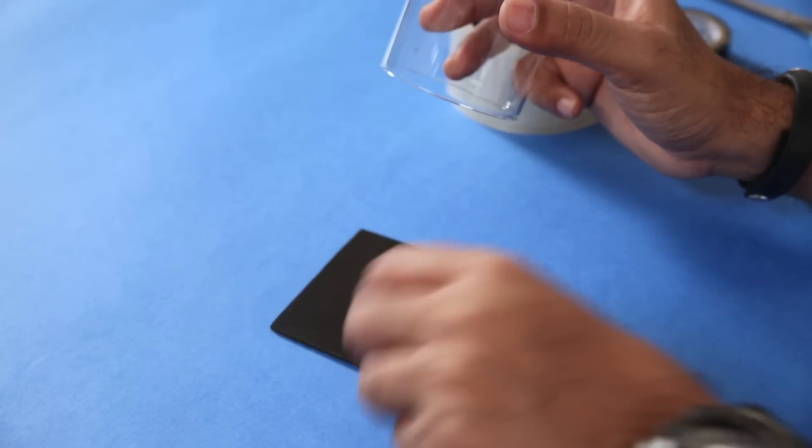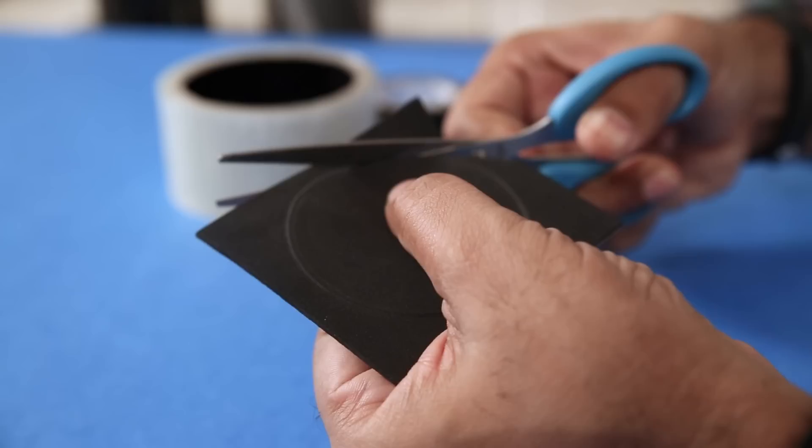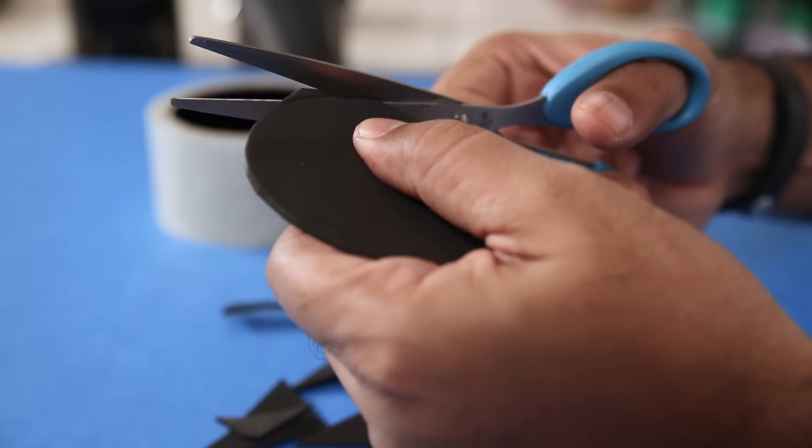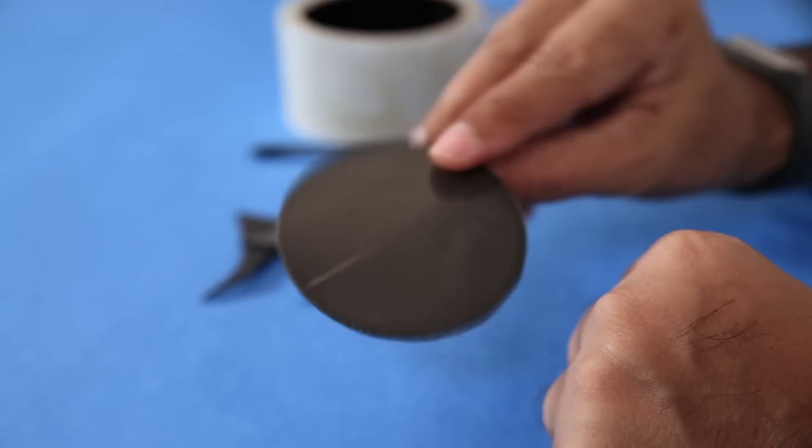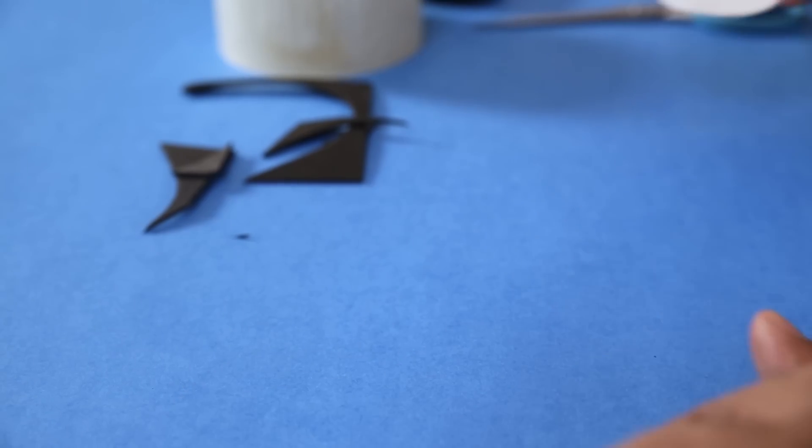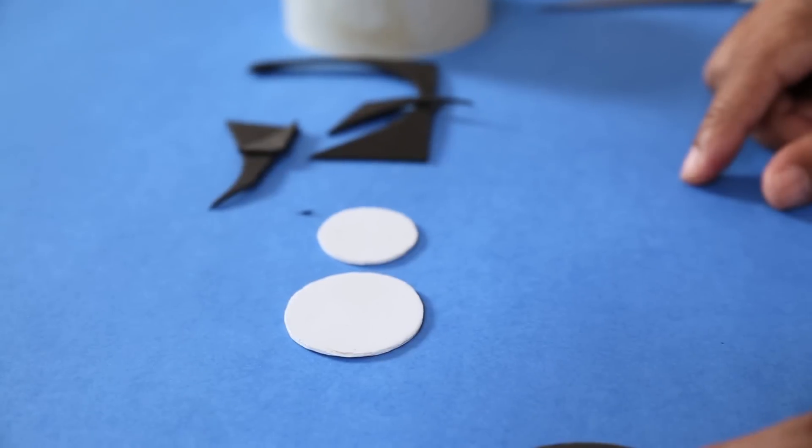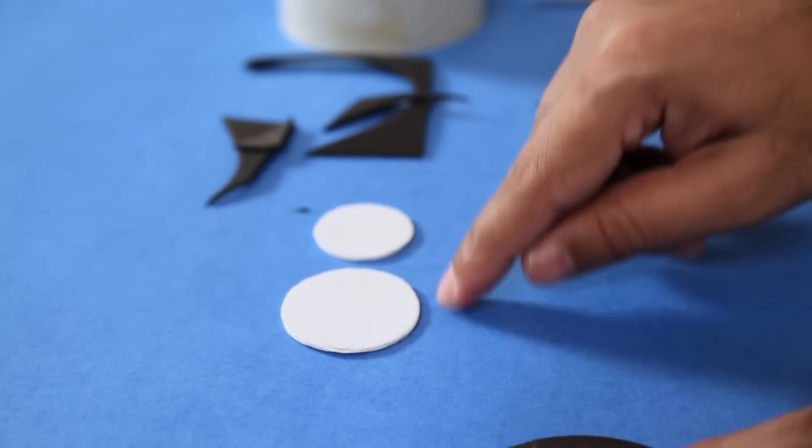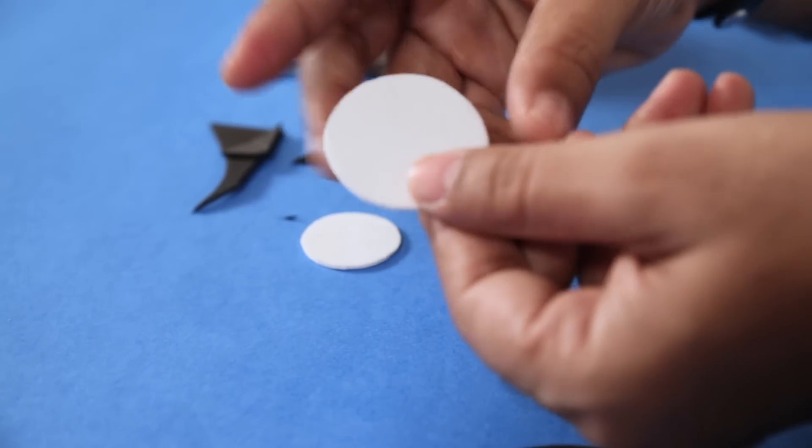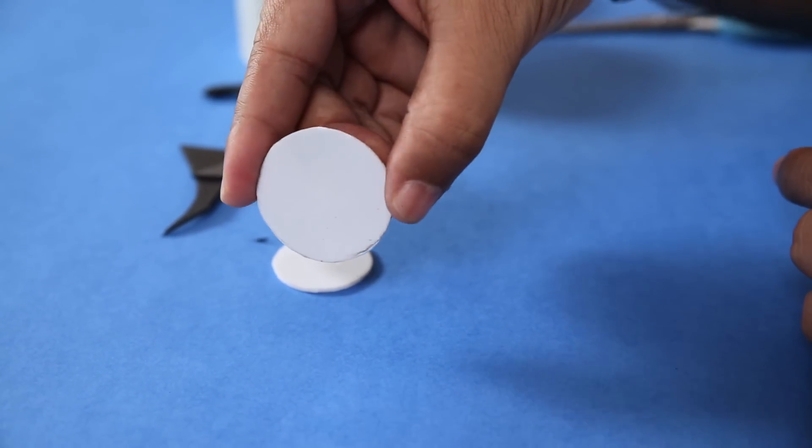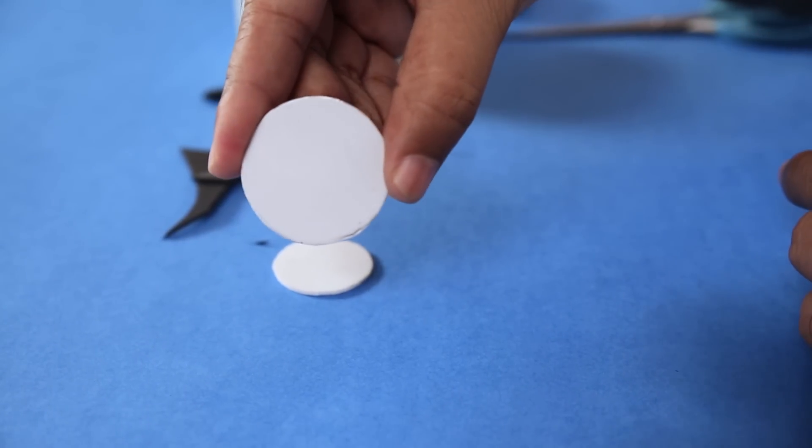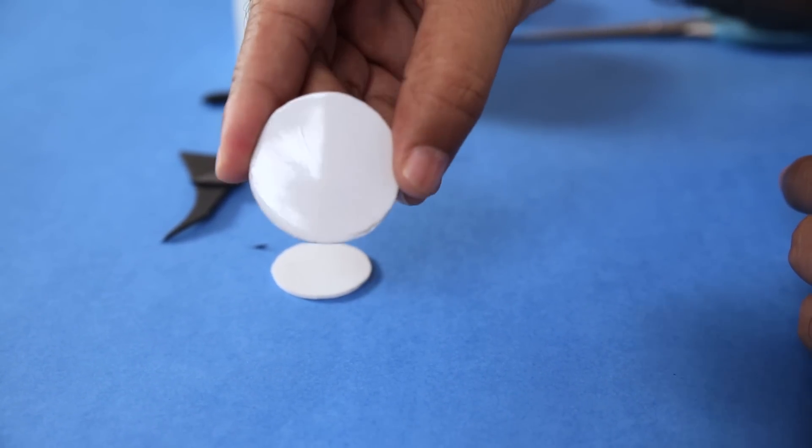And there you go. We have a circle. And the same way, I have cut two more circles here. And this time with a white foam sheet. And if you notice, I have done the same thing. I have put sticky tape on it to give it a nice shiny glossy finish.